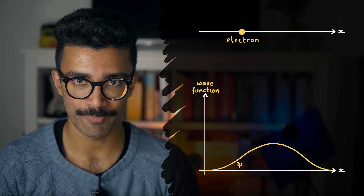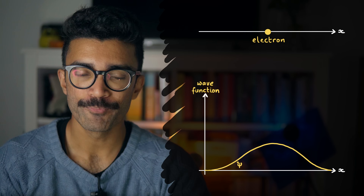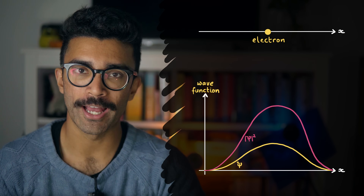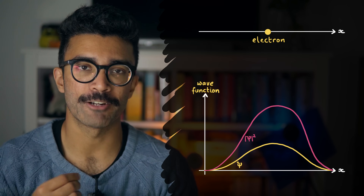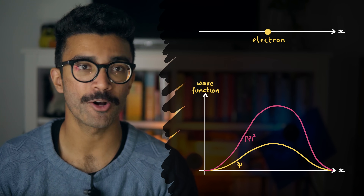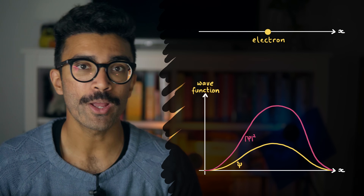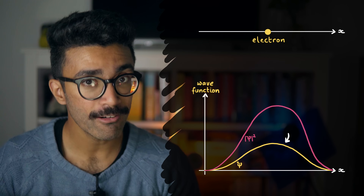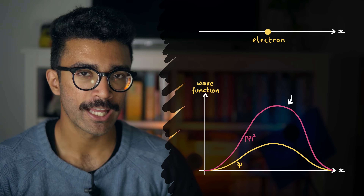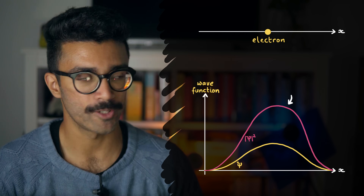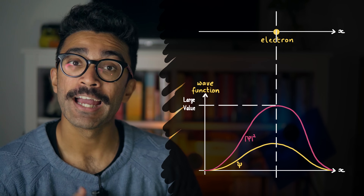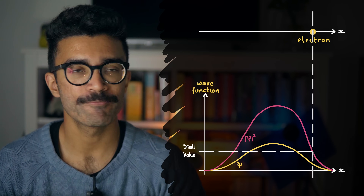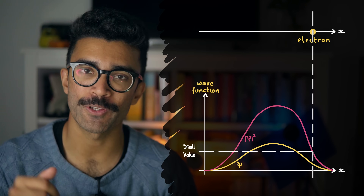When we try to measure its position, if we take the wave function and square it — or rather take its square modulus — that square modulus is directly related to the probability of finding the electron. If the wave function looks like this for our particular system, then squaring it looks like this, and therefore we're more likely to find our electron in this region of space and less likely to find it here.